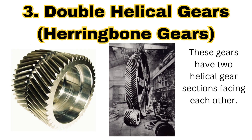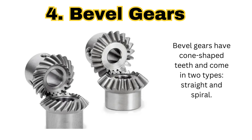The next type of gear is the double helical gear, generally called the herringbone gear. Here the two helical gear sections are facing each other, as you can see in the picture. Double helical gears are excellent for reducing vibrations and are used in high precision applications such as in aerospace.